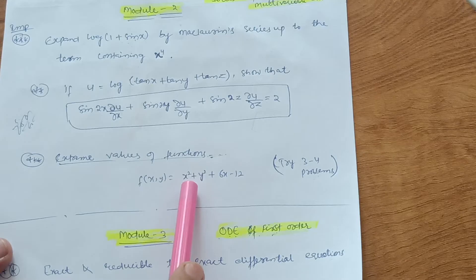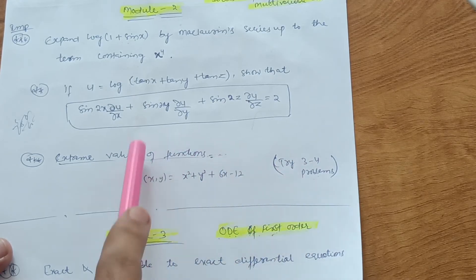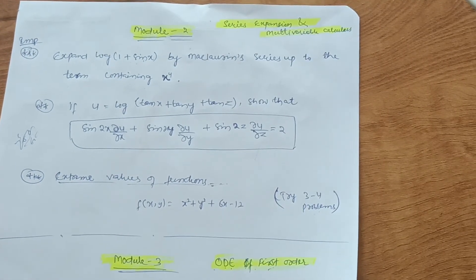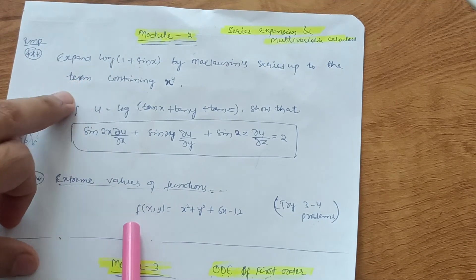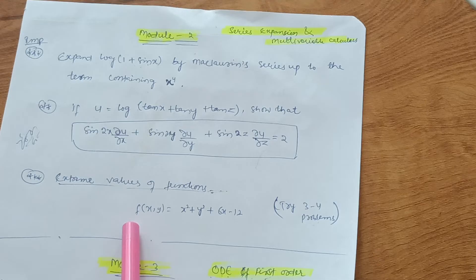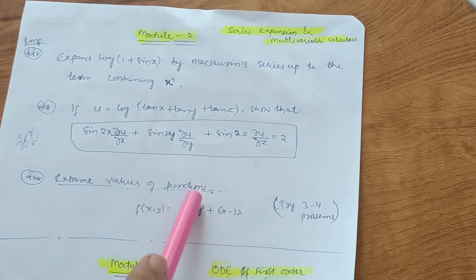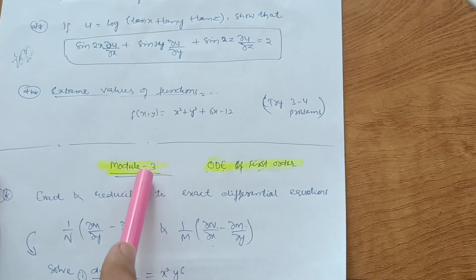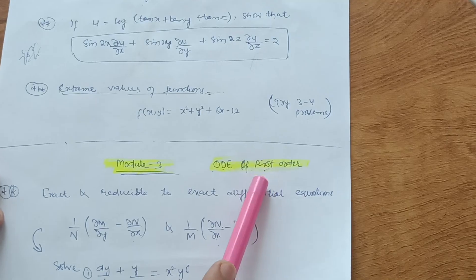Next is extreme values of functions. For example: f(x, y) = x² + y² + 6x − 2y. Try three to four problems from this portion — that is maxima and minima. If you are not comfortable with these problems, focus on Maclaurin's series at minimum, so you get at least 7 marks from Module 2 in the worst case. At least practice Maclaurin's series.